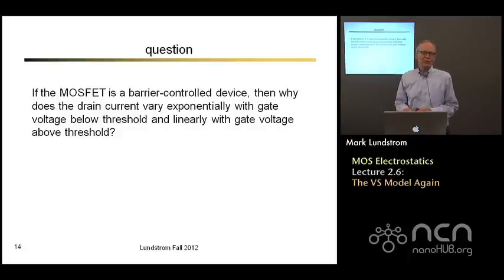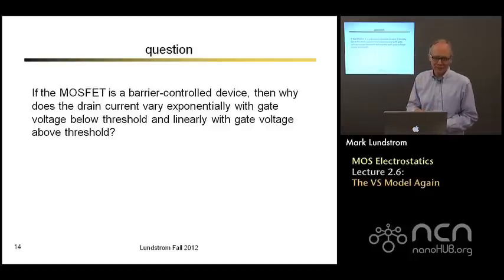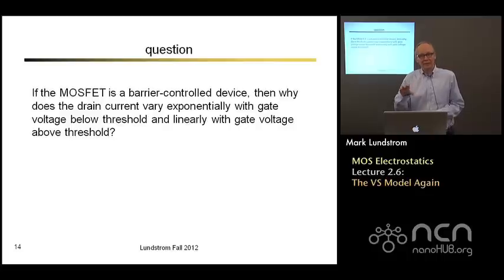So let me just pose a question that I'm not going to answer, but I'll encourage you to think about. If a MOSFET is a barrier controlled device and current goes exponentially as e to the minus barrier height over kT, then why is it exponential only under threshold? Why is it linear above threshold? Does anything change fundamentally? The answer is no, but I'll encourage you to think about that. And if you come up with a solution to that, let me know and we'll discuss it a little more. It turns out they have a simple solution that's related to MOS electrostatics.